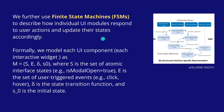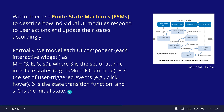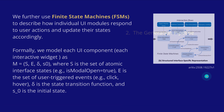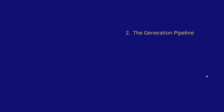Then, finite state machines describe how the individual modules respond to the user action and update their state accordingly. We model each UI component as a particular tuple — it is the set of triggered events, and delta is the state transition function. We have an initial state, and everything is, of course, a partially observable Markov decision process.